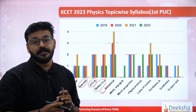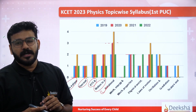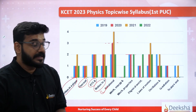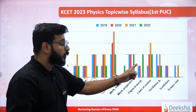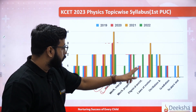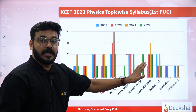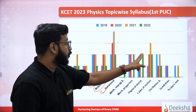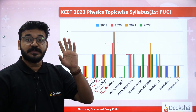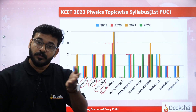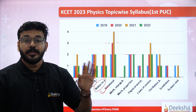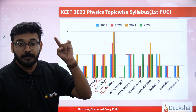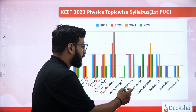Physical world and units and measurements is the first chapter. The trend is variable — every year there is sometimes one question, sometimes no question. In 2021 there was no question, but in 2022 two questions were asked. Please don't leave that chapter. Units and measurements specifically should not be ignored — there are no questions in some years but two in others.